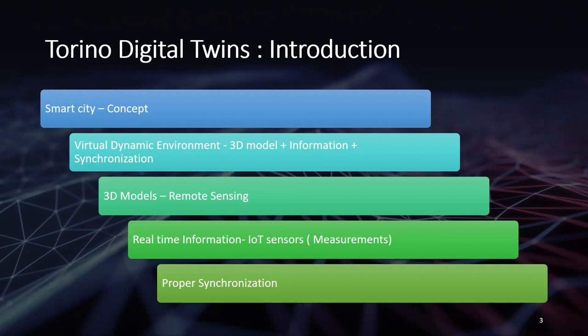The dynamic information from sensors changes the 3D model at a specific rate of synchronization — otherwise it's just a static 3D model. The 3D models come from remote sensing sensors, photogrammetry, LiDAR, and real-time information from IoT sensors. To connect them, there should be a proper rate of synchronization between the real-time measurements and the 3D model to achieve dynamic visualization, and this can be done in different ways.